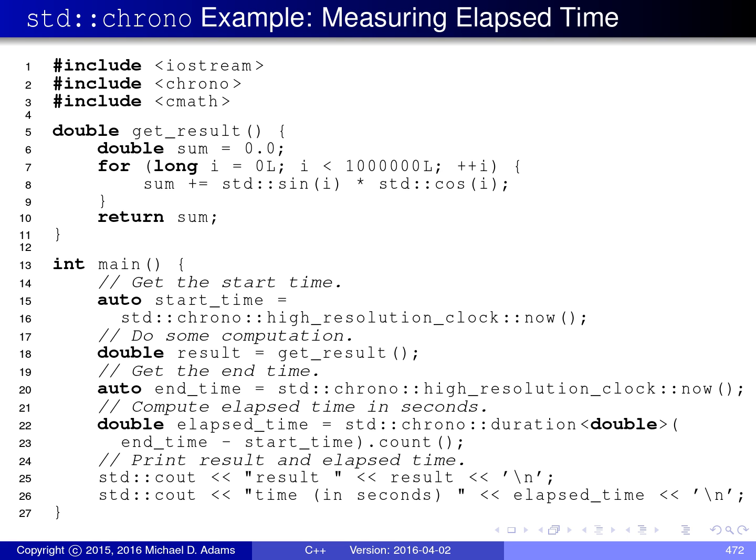On this slide, I have a code example illustrating the measuring of elapsed time using the chrono functionality in the standard library. So let's look at this code example in more detail. To begin with, you'll notice that I include the header file chrono. This is necessary to pick up any declarations and definitions related to the chrono functionality from the standard library.